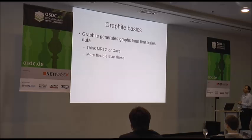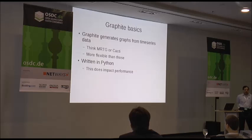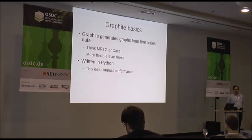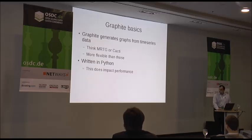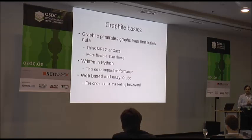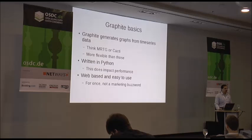Graphite basics: it generates graphs from time series data. It's more flexible than MRTG or Cacti or any of those static rendering tools. It doesn't quite yet do fancy front ends, but you can always write your own. It is written in Python and at our scale it does have a performance impact — for most people it shouldn't matter. It's web-based, easy to use. If you can generate a graph in Excel, you can do it in graphite. It helps a lot when you're doing business metric stuff.